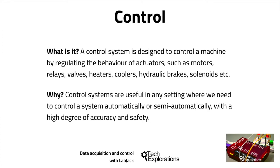Speaking of control, control is the outcome of a control system - it is what a control system does. A control system is a computer that is designed specifically to control one or more actuators, such as motor valves and hydraulic brakes. In most every case, a control system regulates an actuator based on some kind of input and logic. Logic is implemented via a programming language, and input derives from a sensor or from the user via a user interface.